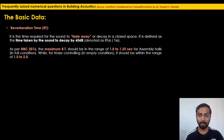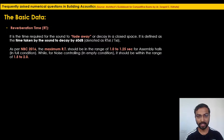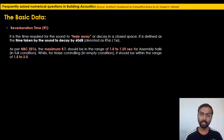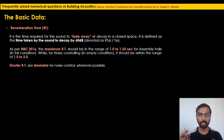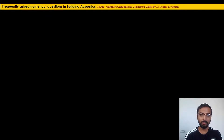As per NBC, the maximum reverberation time should be in the range of 1 to 1.25 seconds for assembly halls in full (occupied) condition. For noise control in empty condition it should be within 1.5 to 2 seconds. Generally, shorter reverberation times are desirable for noise control so you won't hear echo in enclosed spaces.